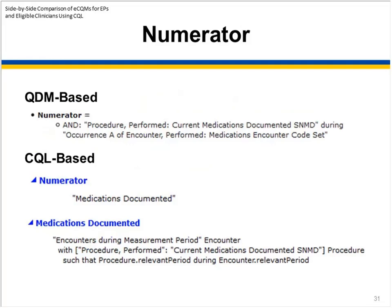Looking at the numerator: again, the result of the numerator expression is a list of encounters because this is an encounter-based measure, so all top-level population criteria must return a list of encounters. The expression is still evaluated in the patient context, written from the perspective of a single patient. This differs from QDM in that the return type is important because it informs how the expression can be used later on — in QDM, the return type was not as clear.